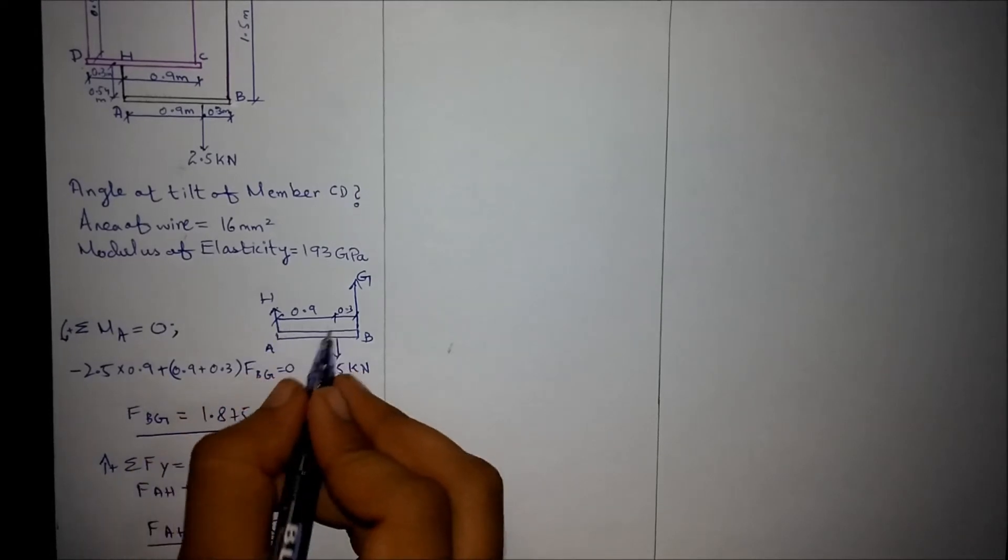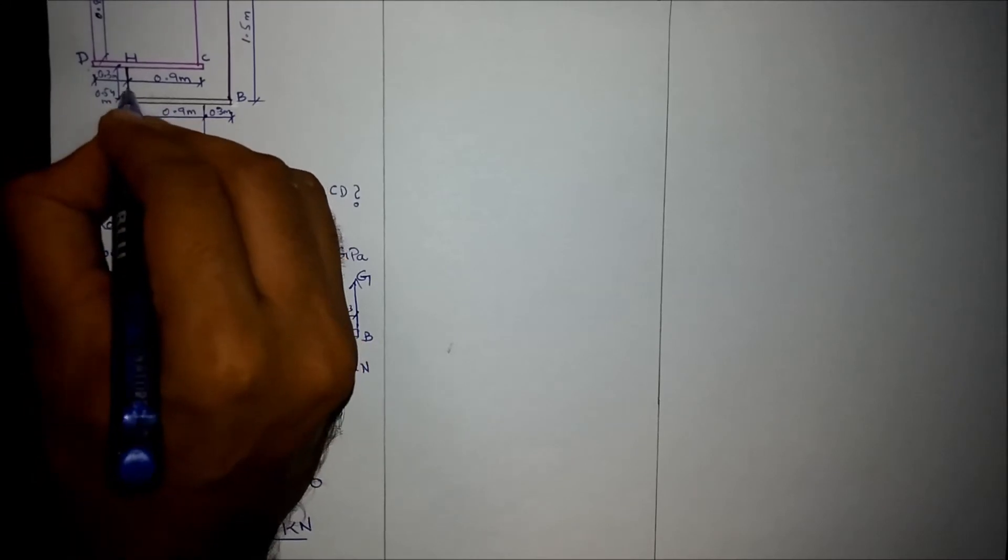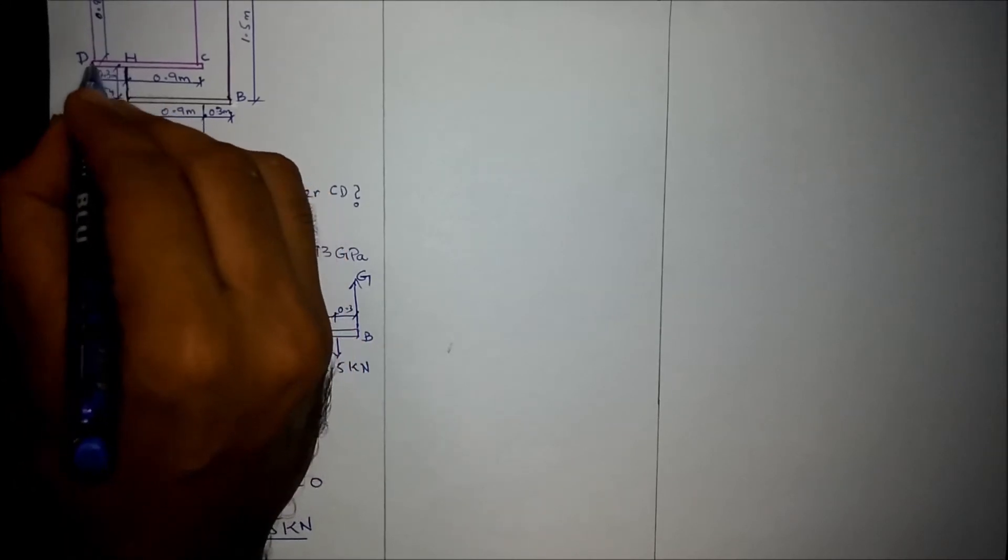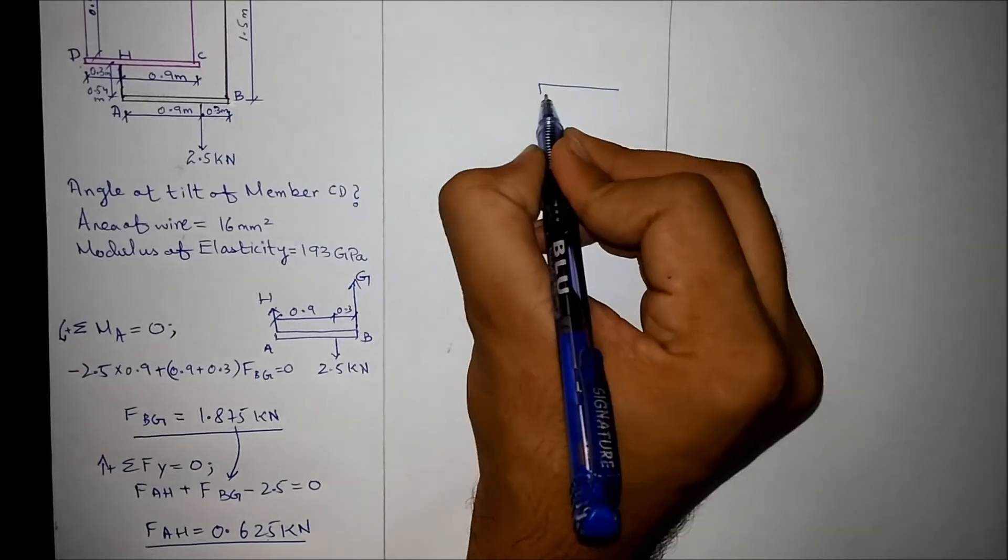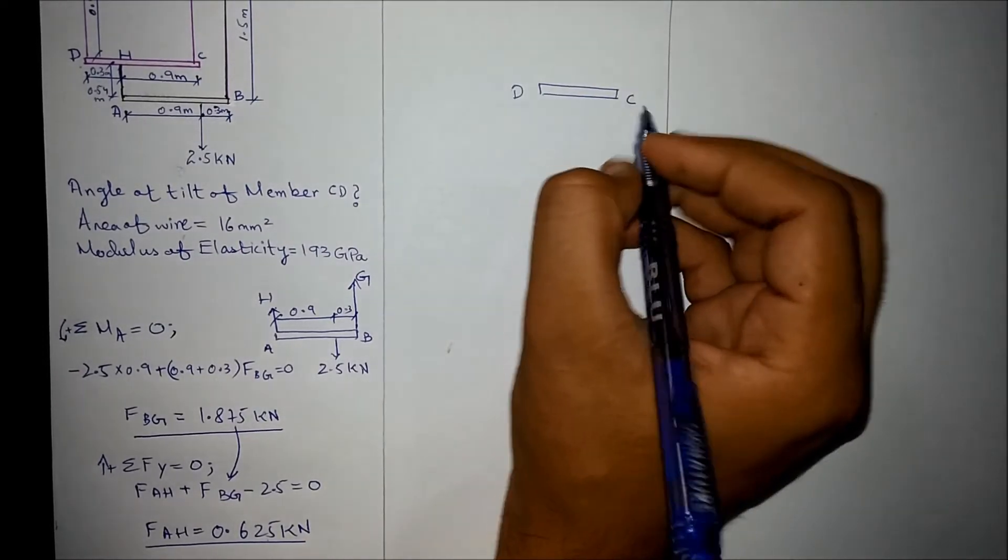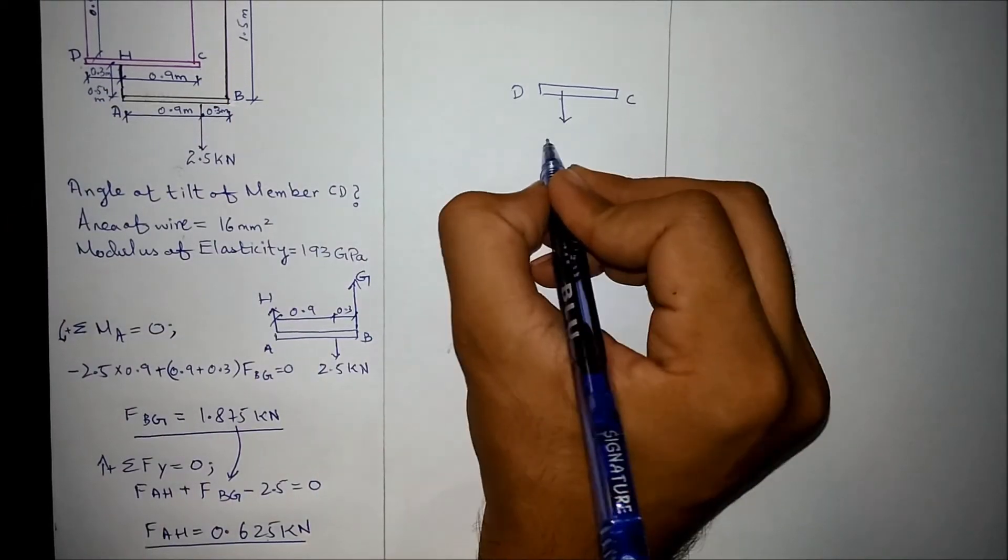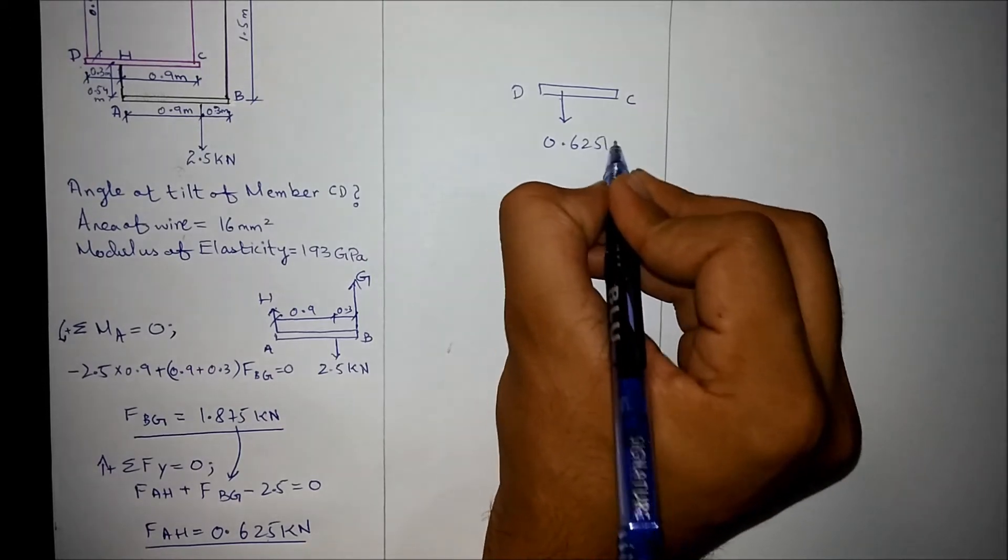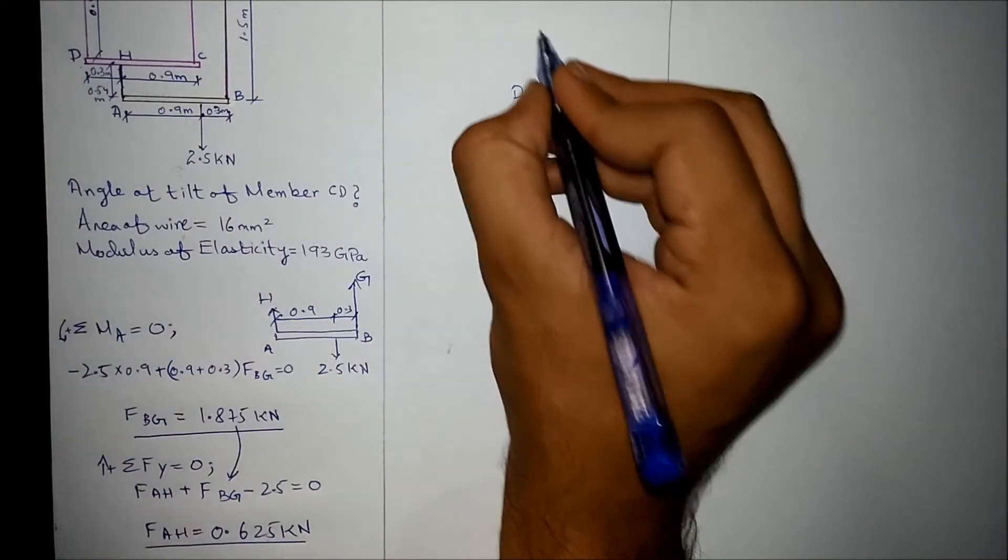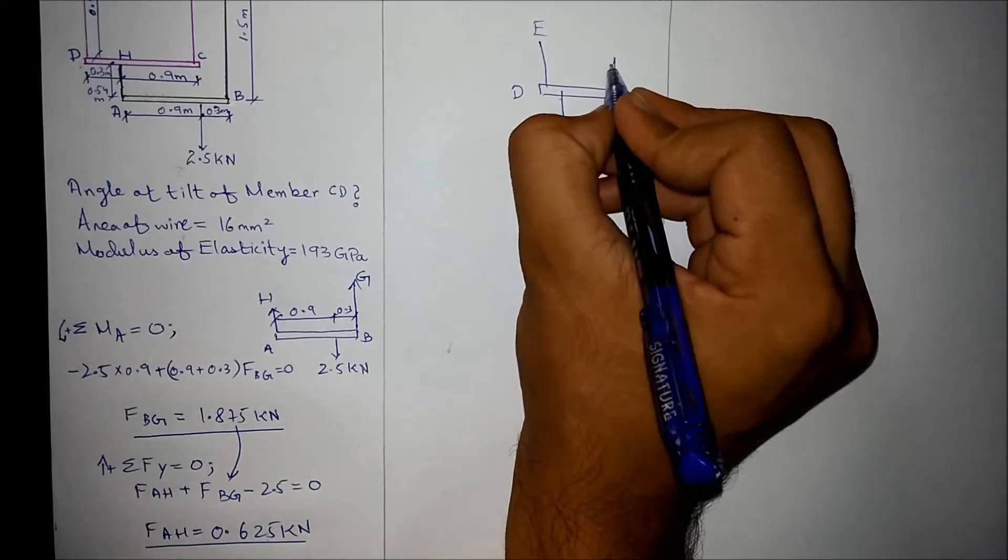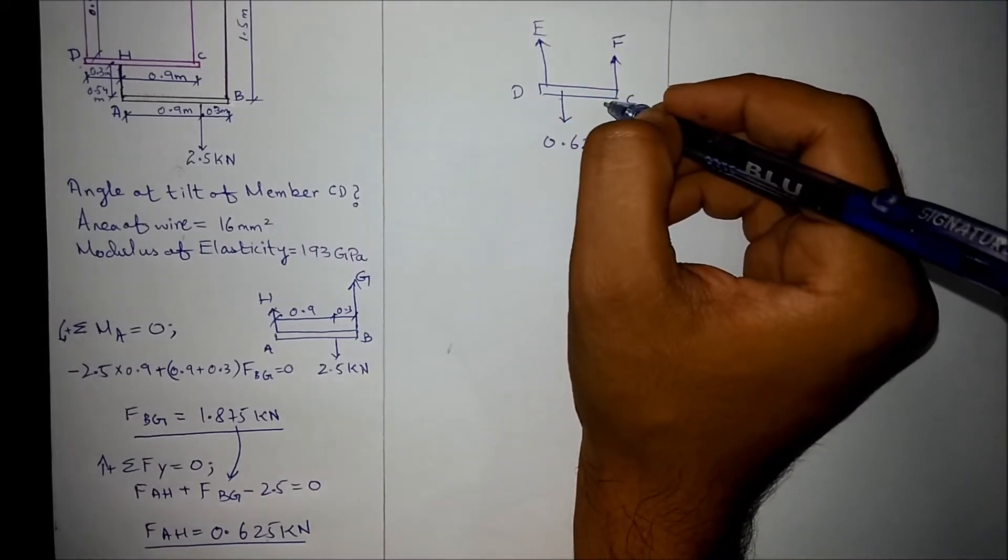Now we have the forces in these members. This 0.625 kN is in this wire and this wire is transferring the point load on the member DC. Member DC would be having a force transferred by this wire as 0.625 kN and the wires are DE and CF. The free body diagram.